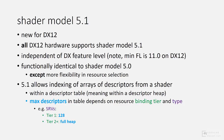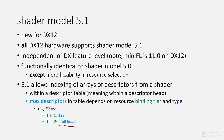The maximum number of descriptors that can be in a range in a descriptor table is dependent on the resource binding tier of the hardware and descriptor type. For example, consider SRVs: on resource binding tier 1, the maximum range size in a descriptor table is 128 descriptors. By contrast, resource binding tier 2 and above hardware supports an array of SRVs that fills the entire descriptor heap, which can be up to a million descriptors in size.